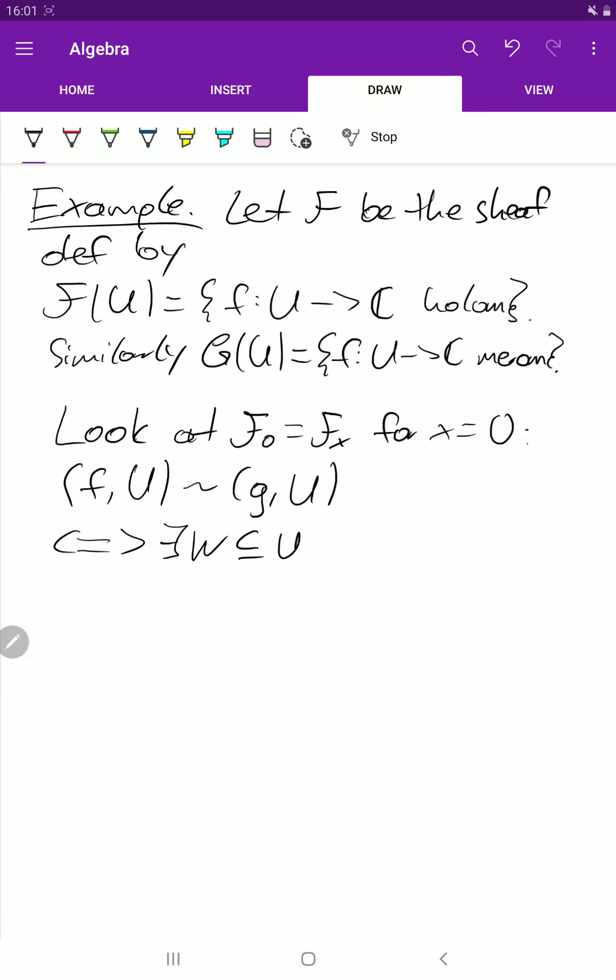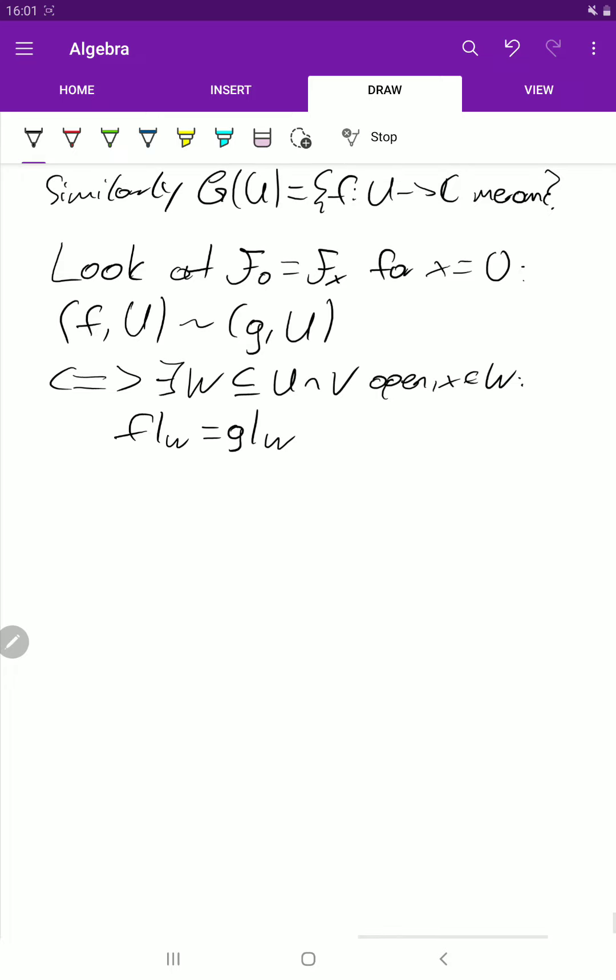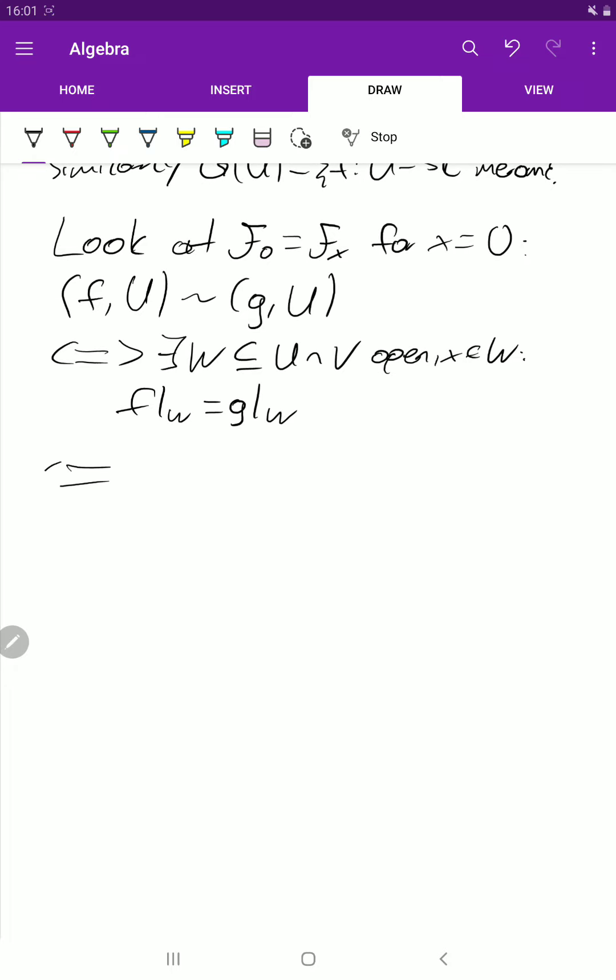Let's look at the definition. If we have a W, again W open, x in W, such that f restricted to W is equal to g restricted to W. And now I claim that this is equivalent to the statement that the Taylor series of f agrees with the Taylor series of g